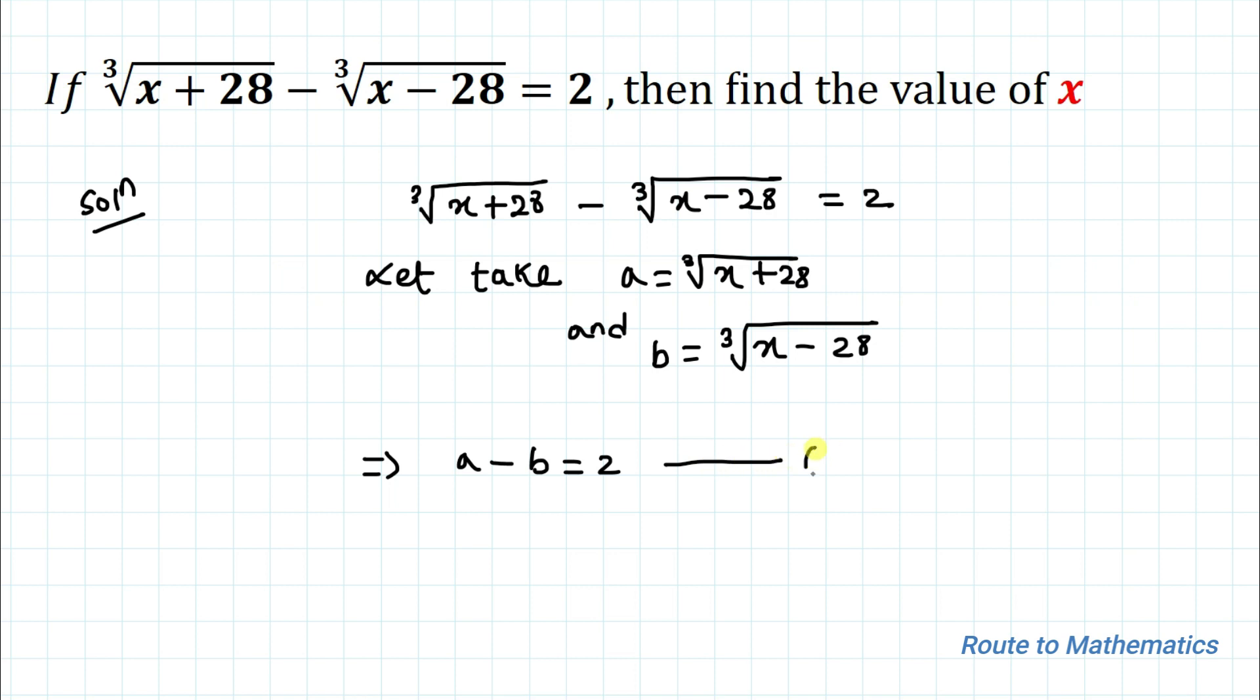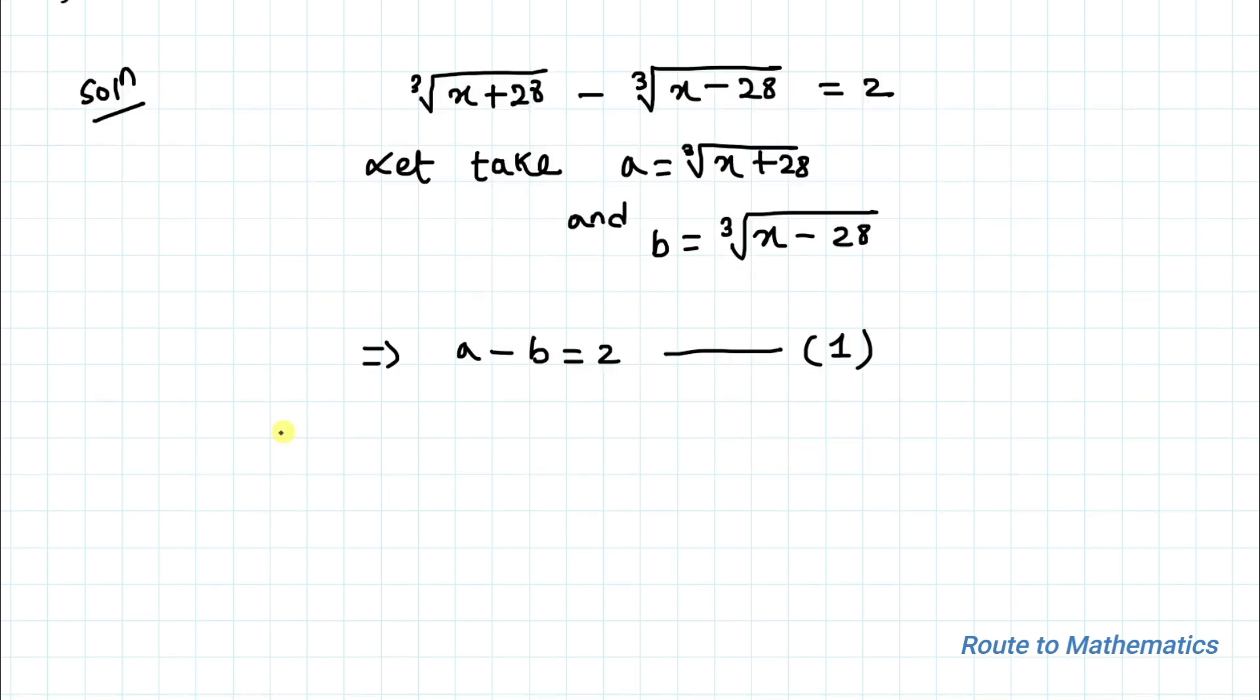Let's take it as equation 1. We know the algebraic identity that a minus b whole cube equals a cube minus b cube minus 3ab multiplied with a minus b.